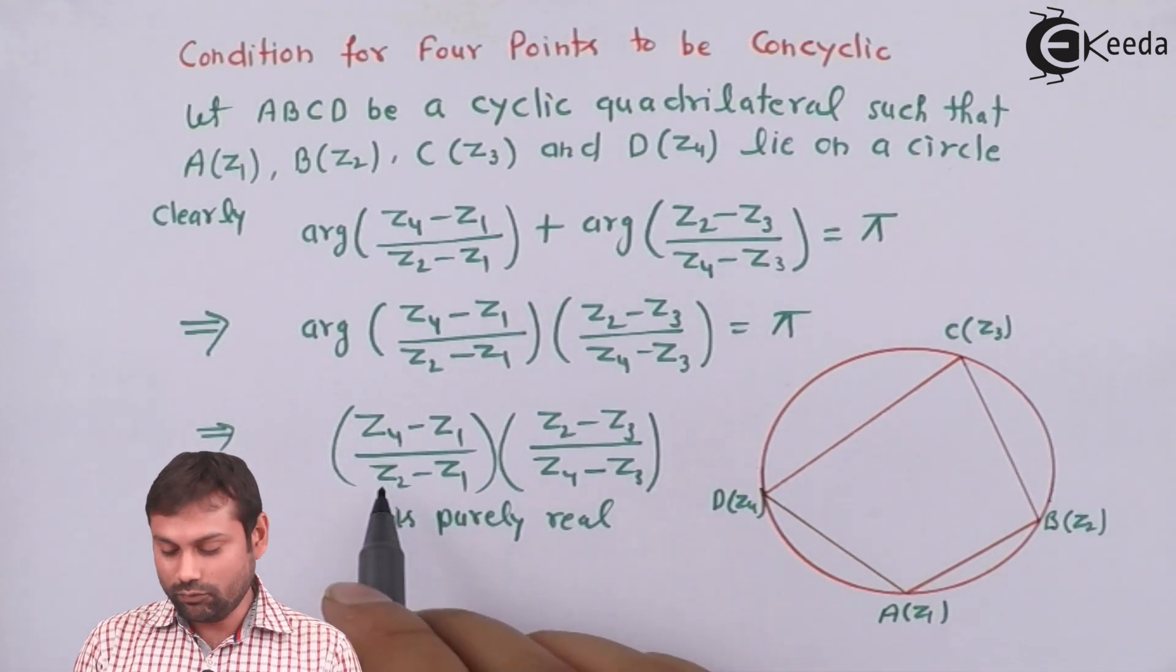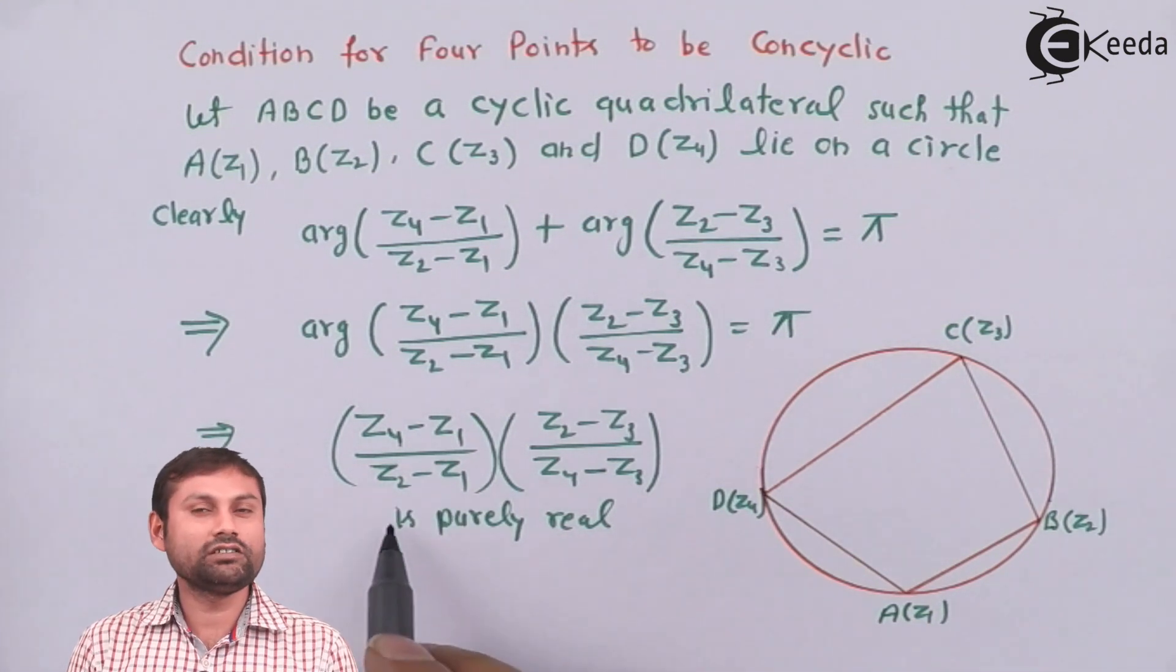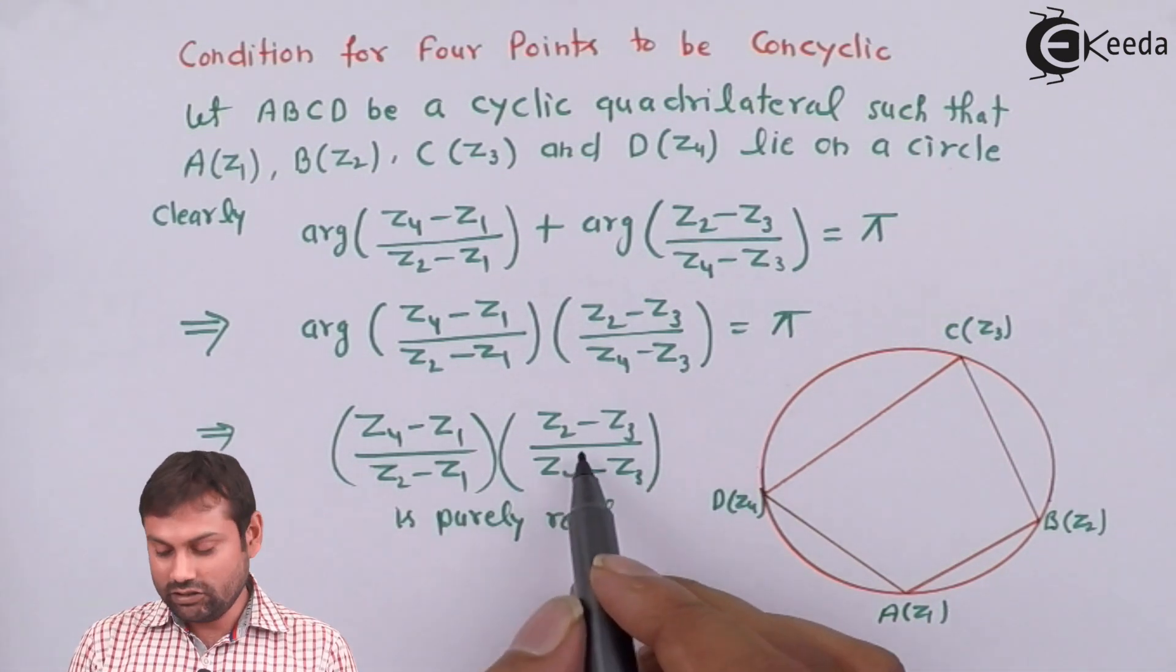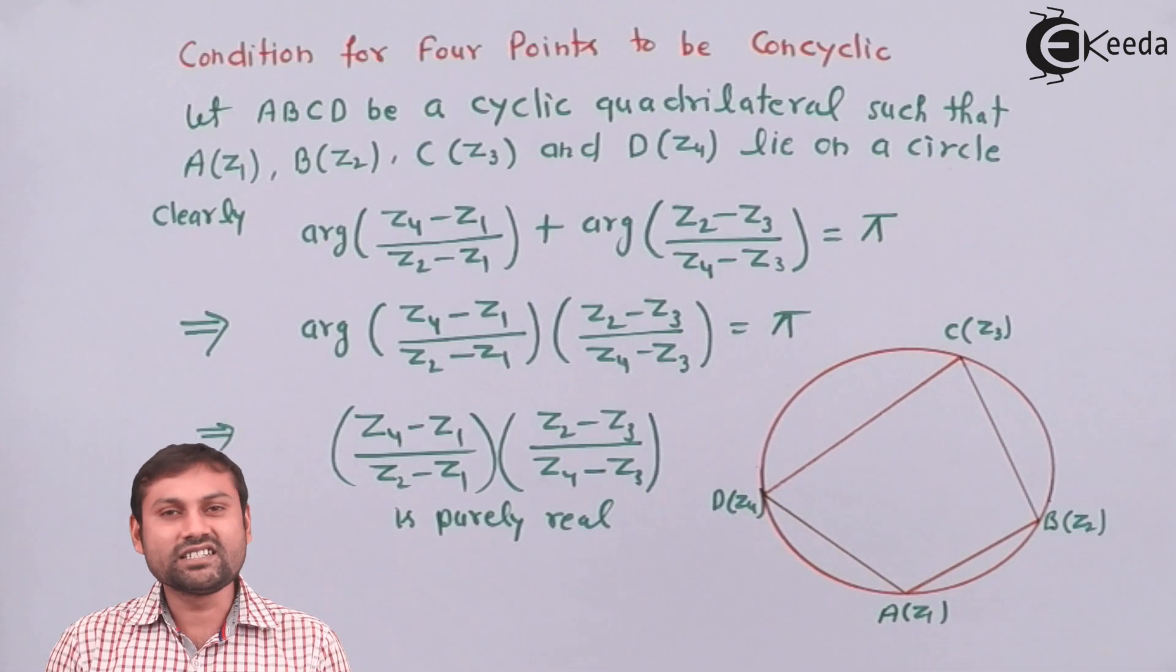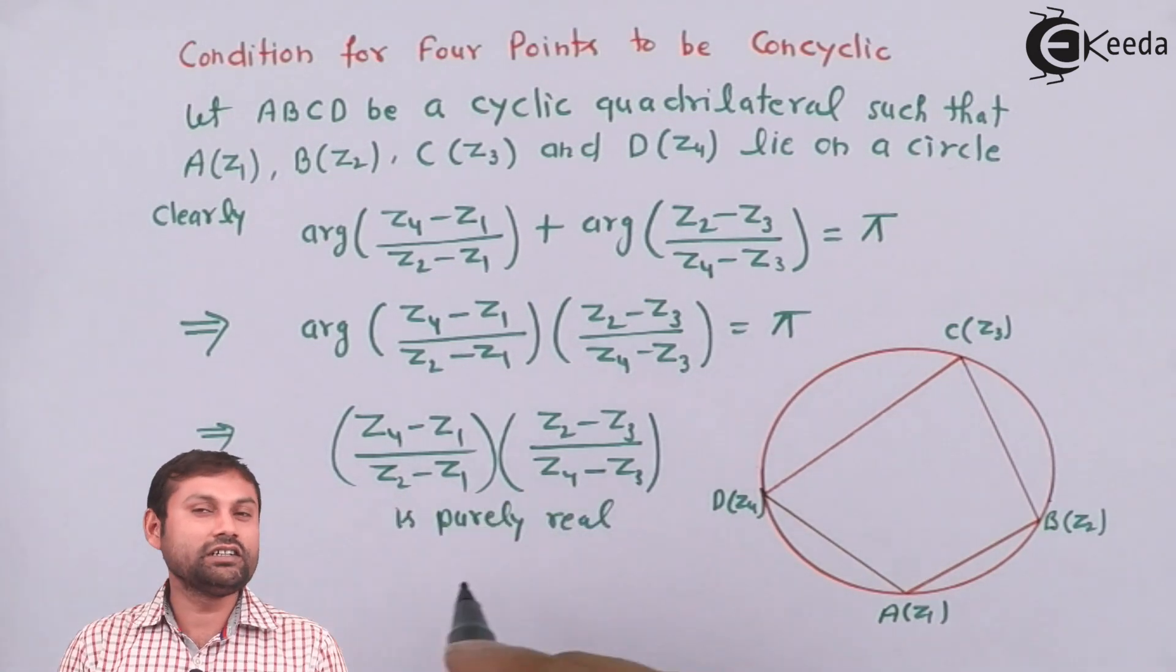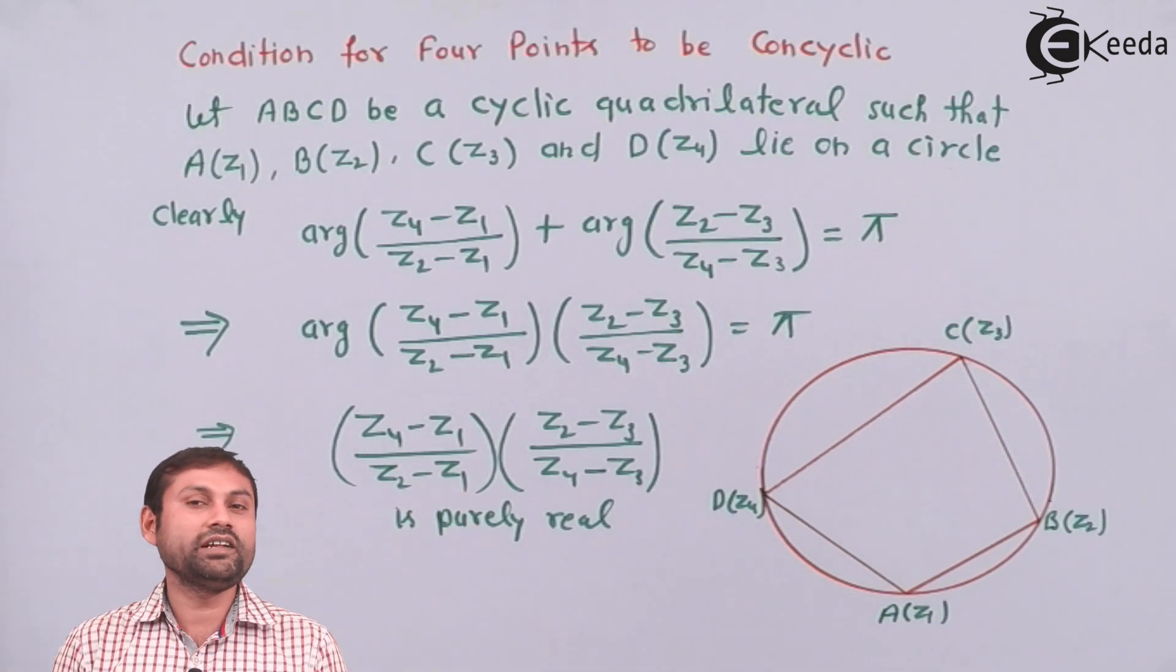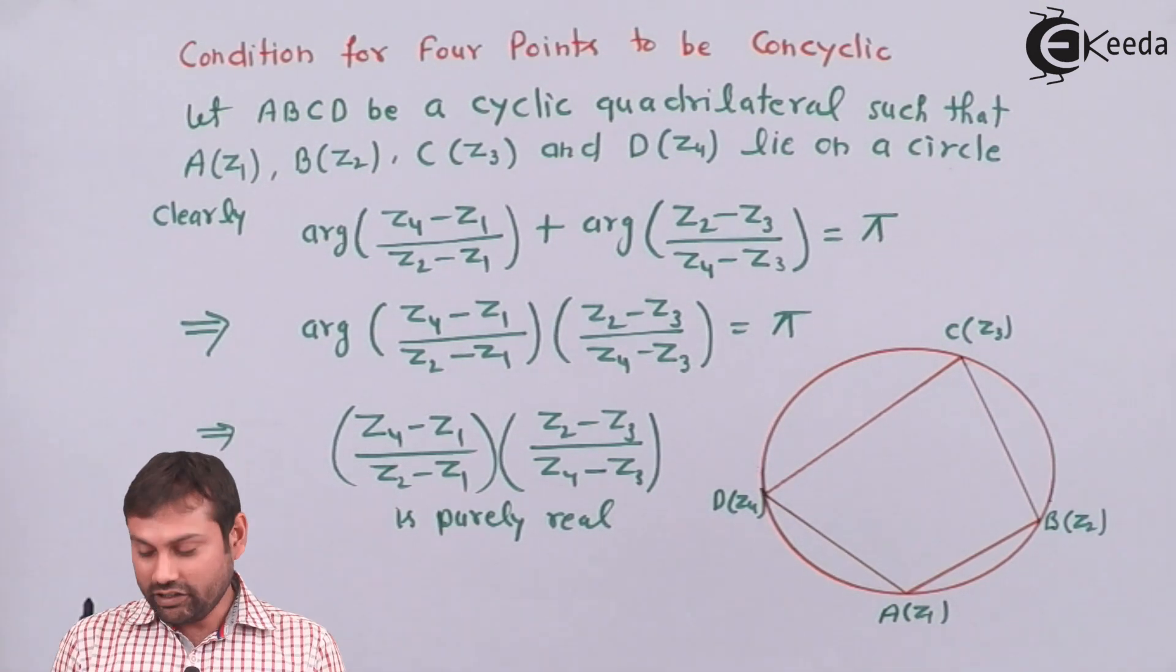That's why I have written (Z4 minus Z1) upon (Z2 minus Z1) into (Z2 minus Z3) upon (Z4 minus Z3) equals to purely real number. If you get this purely real number, make sure you have taken them in order.